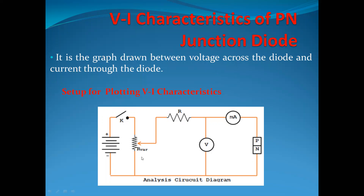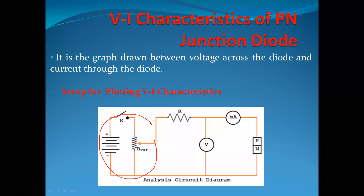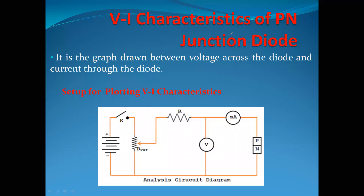The variable power supply is connected so that on the X axis we take voltage V and on the Y axis we take current. We can vary the voltage along the X axis using the variable power supply. We can replace this diagram with a voltage source to represent the VI characteristics.